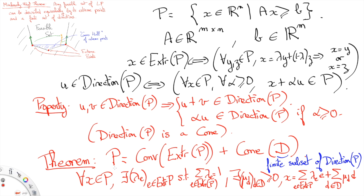Equivalently, in Minkowski's notations, we have P equals to the convex hull of the extreme points of P plus the cone of D, i.e. any point in P is a sum of an element of the convex hull of extreme points of P and an element of the cone spanned by the directions in D.